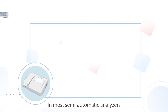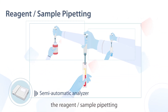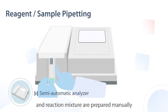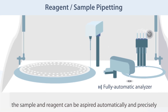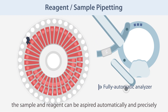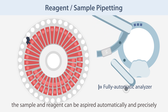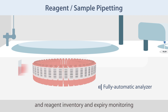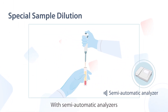In most semi-automatic analyzers, the reagent, sample pipetting, and reaction mixture are prepared manually. In an automatic chemistry analyzer, the sample and reagent can be aspirated automatically and precisely. The software can also support barcode loading and reagent inventory and expiry monitoring.